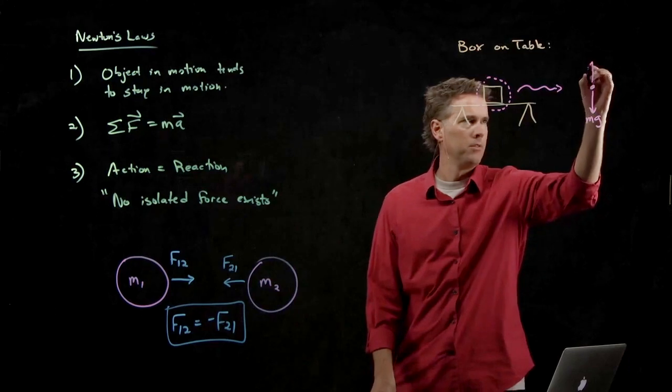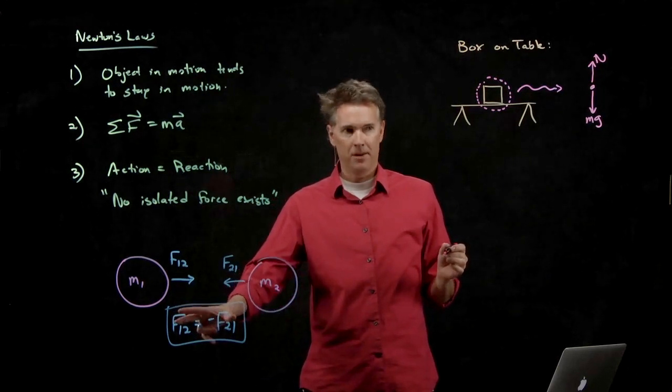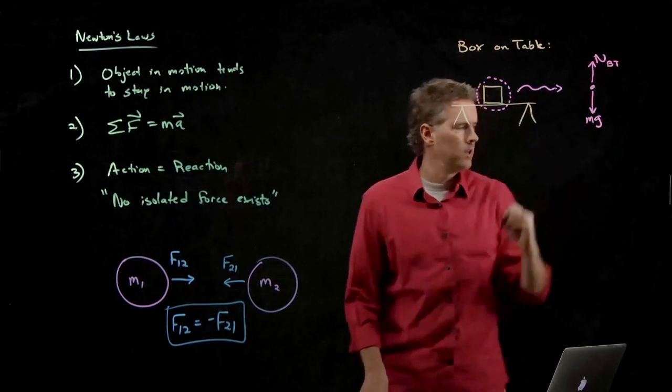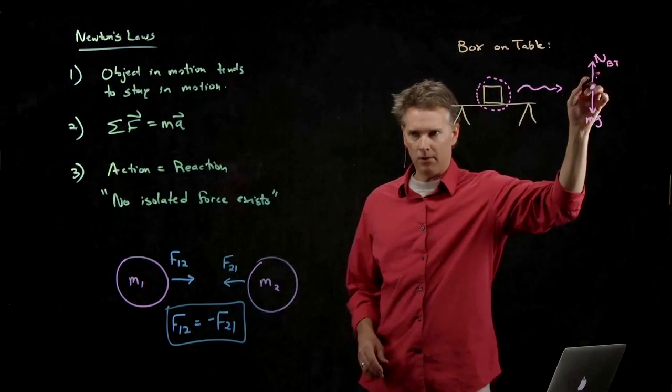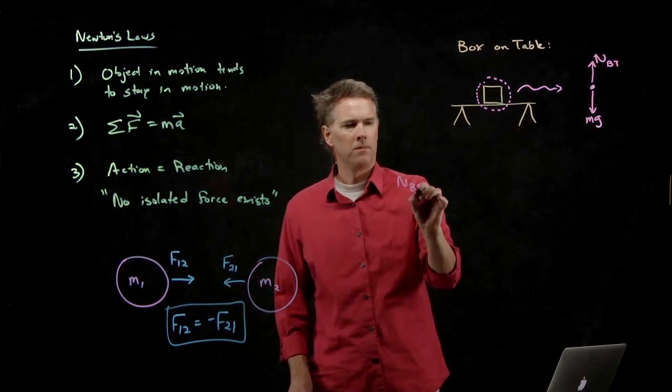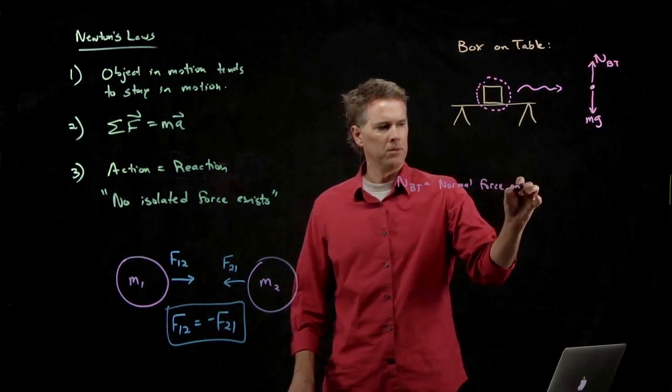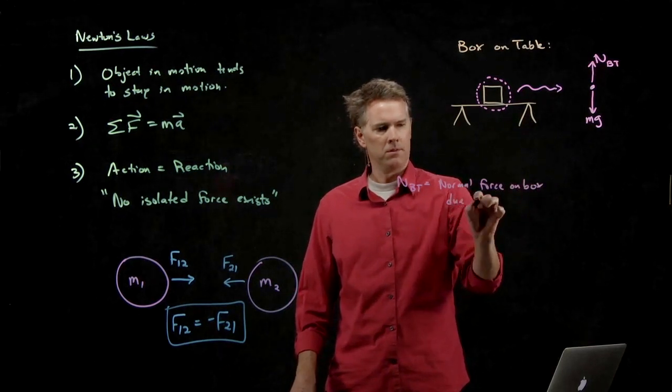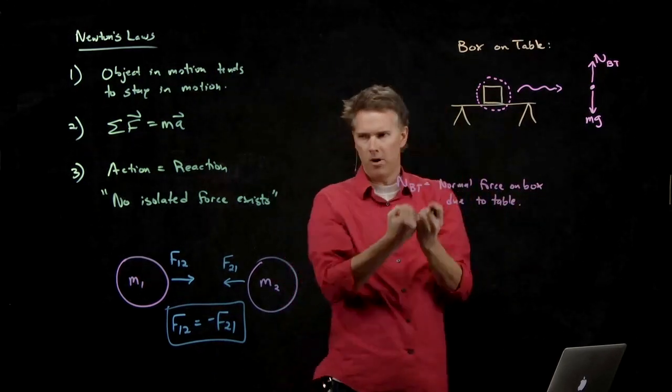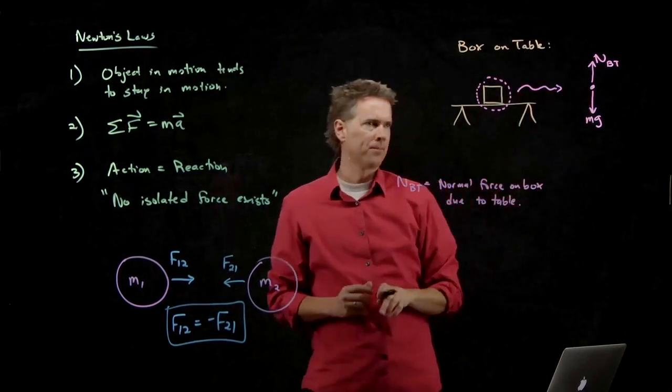The normal force from the table. We gotta be a little bit careful about our subscripts now. So, let's write it as the following. N, B, T. The normal force on the box due to the table. Normal force on box due to table. Gravity's trying to pull it down. It doesn't fall because it's at rest. The normal force on the box due to the table is what's holding it up.